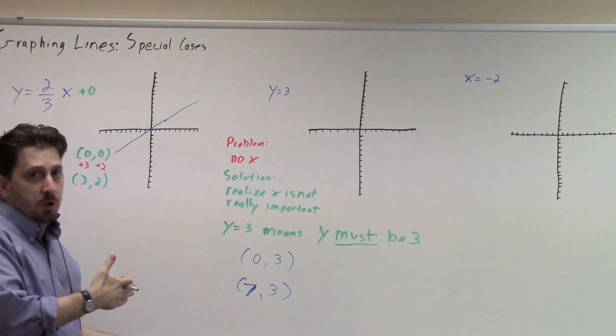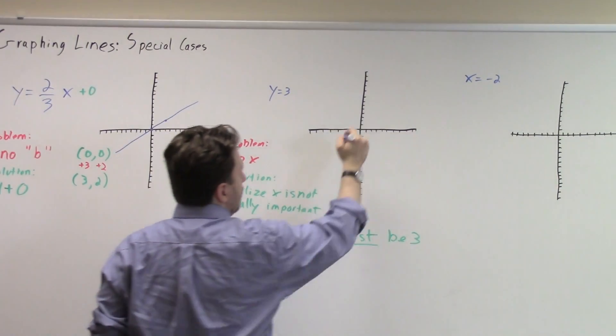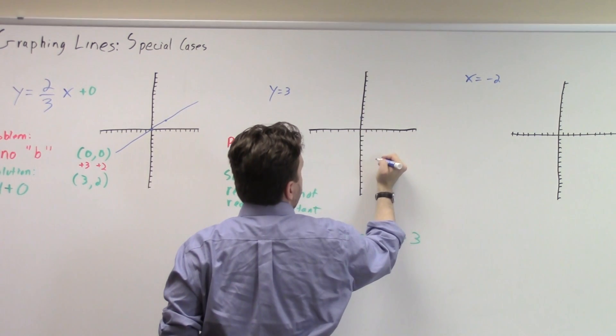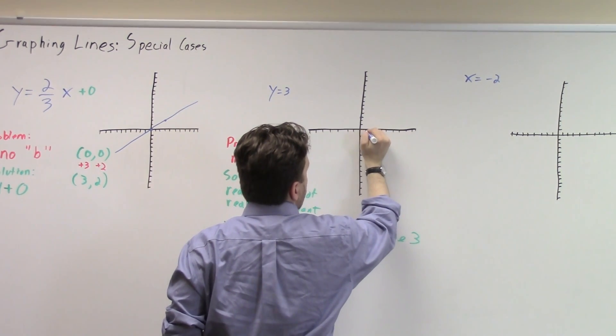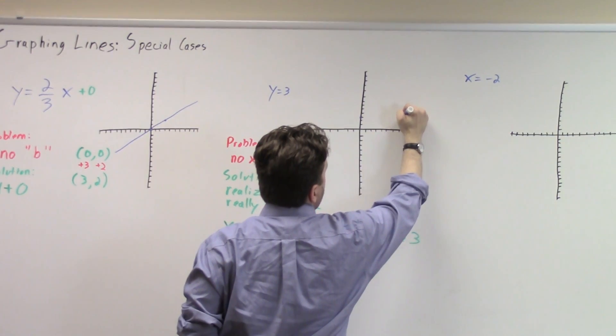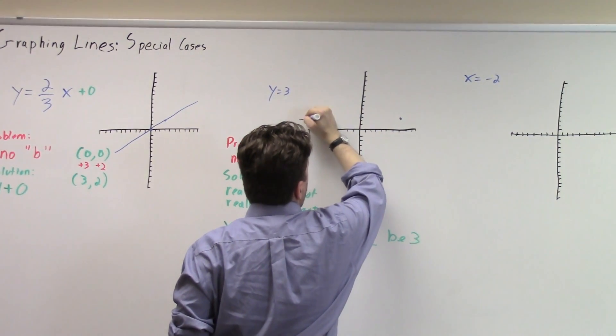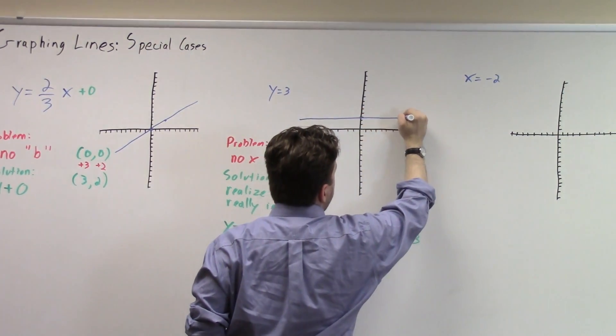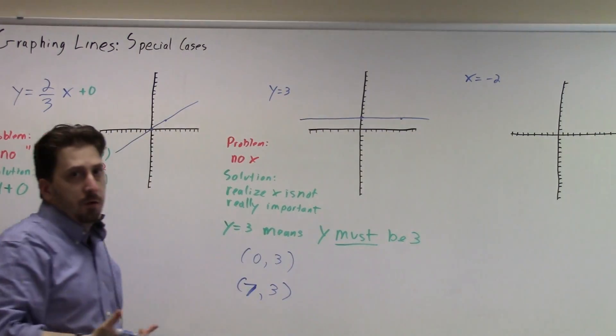Now I go to graph my line. So my first point was zero, three, which will be right here. My second point would be seven, three. One, two, three, four, five, six, seven, over here. And when I draw the line connecting through those two points, I'm going to see that it's going to be a horizontal line.